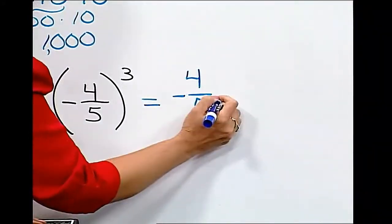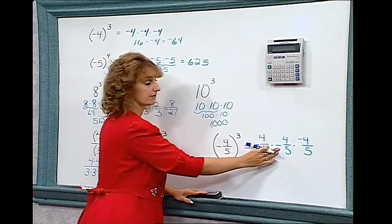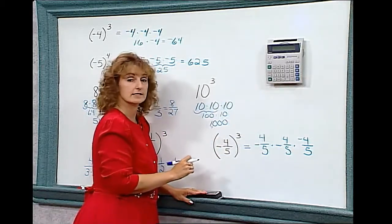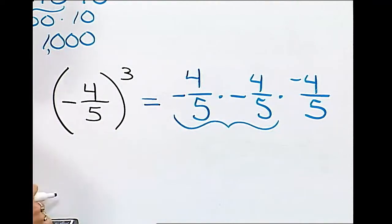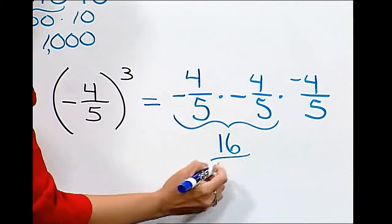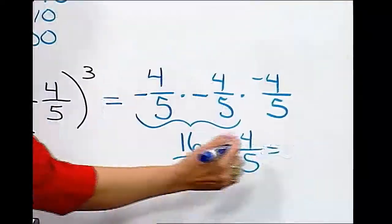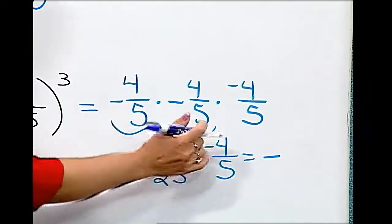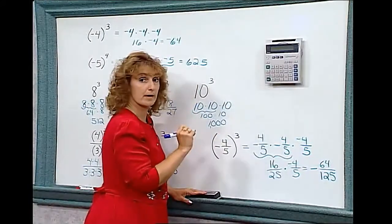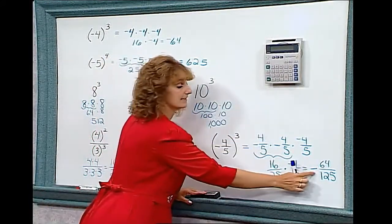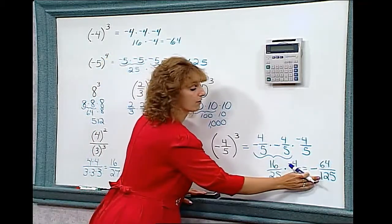Negative four-fifths times negative four-fifths times negative four-fifths. Notice that we can write the negative sign in front of the fraction, in the numerator, or even in the denominator — it does not matter; the entire fraction is still negative. Grouping the first two: a negative times a negative is positive, four times four is sixteen, five times five is twenty-five. Now multiply that by negative four-fifths: a positive times a negative gives a negative answer. Sixteen times four is sixty-four, twenty-five times five is one hundred twenty-five. With a negative base and odd exponent, I did get a negative answer. So negative four-fifths to the third power is negative sixty-four over one hundred twenty-five.